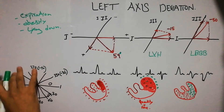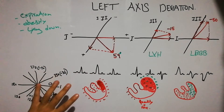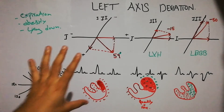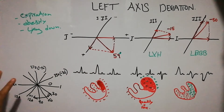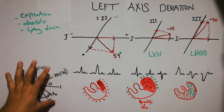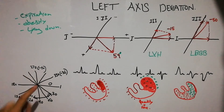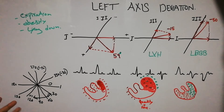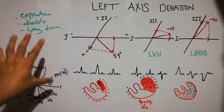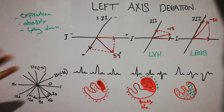Here is our frame — our measuring scale through which we are going to measure the vector. The numbers on this measuring scale are fixed: lead 1 has 0 degrees, lead 2 has 60 degrees, lead 3 has 120 degrees, AVF has 90 degrees, and so on. The positions of these vectors are fixed; they are looking toward the cardiac vector from different angles.